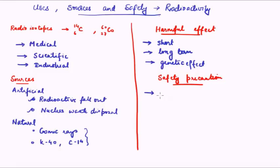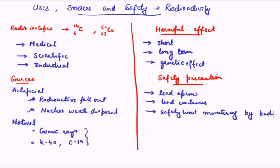So safety precautions broadly speaking: lead aprons, lead containers for the radioactive material, and safety limit monitoring. These are the safety rules that should be followed by anyone handling radioactive material.